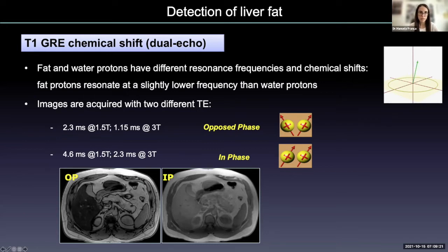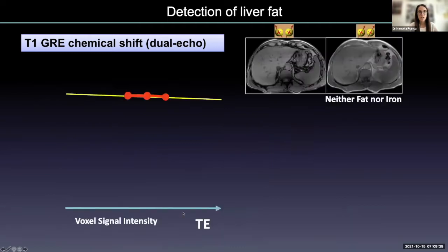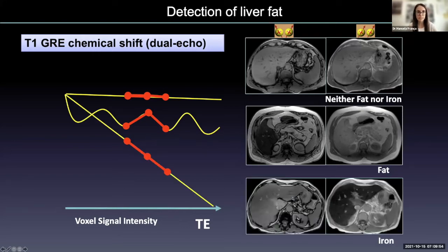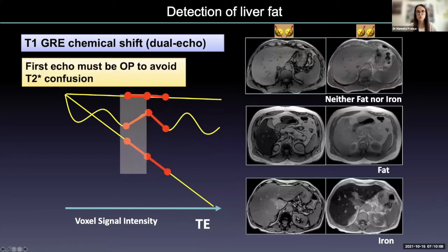Liver steatosis is recognized by a signal drop on the opposed-phase images compared to the in-phase images. If there is iron in the liver parenchyma, iron has a paramagnetic effect, so it accelerates the T2* decay and lowers the signal intensity of the liver on the second echo image. This is why the first TE of the sequence should be in opposed phase to avoid T2* confusion.